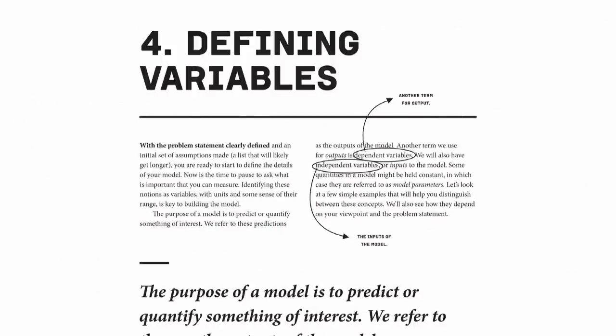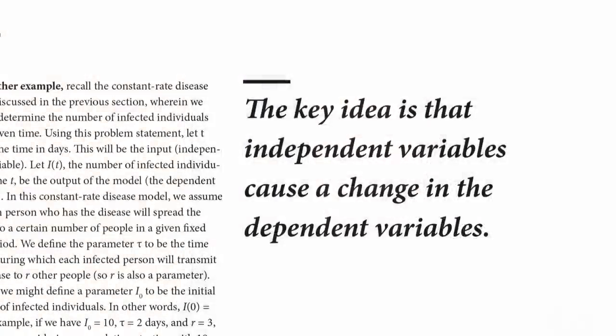Next is determining which inputs — quantifiable numbers and data — can actually be measured, and how the output of your model depends on those variables. Once I've decided what I'm trying to do, what sorts of things are my inputs and outputs, then I need to ask: how do I quantify that? How do I get my hands on those quantities I have control of — those inputs — and how are they going to affect the outputs?